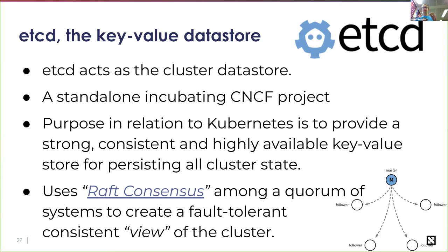As long as there's more than 50% of available peers — based on cluster size — it works. So if you have three peers, you can afford to lose one and your cluster is still functional. It's effective if you have odd numbers. If you have five peers, you can afford to lose two peers and still the cluster is functional because it has 60% of the capacity alive. You can read more on the Raft consensus protocol — it's pretty sophisticated, it's a paper.